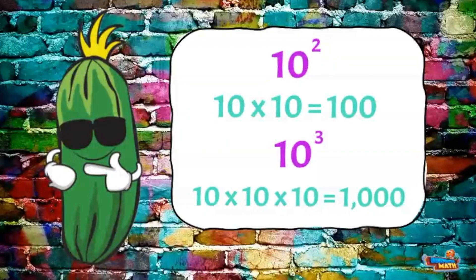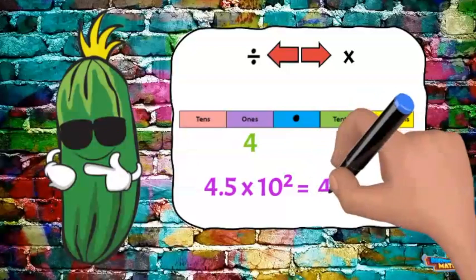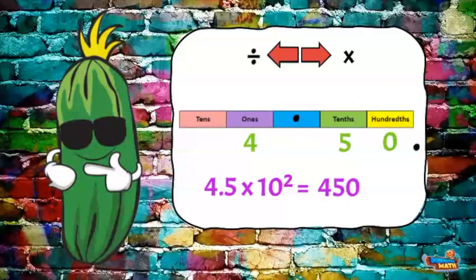When multiplying or dividing decimals by powers of 10, the exponent doesn't change the process. Let's take a look. 4 and 5 tenths times 10 to the second power. 10 to the second power is equal to 10 times 10, or 100. So we are multiplying 4 and 5 tenths by 100. When we multiply by 100 we move the decimal to the right two times. We fill in the empty place values with a zero. This gives us a product of 450.